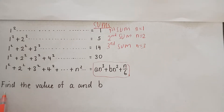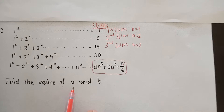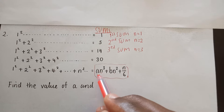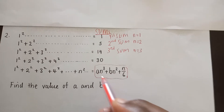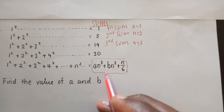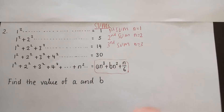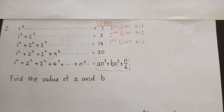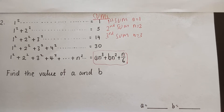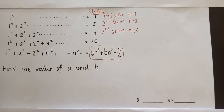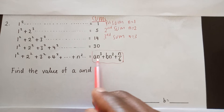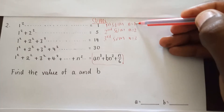Therefore, we are told to find the value of a and the value of b — meaning we have a here and b here, and we need to find their values. Since we have two unknowns, we need to create simultaneous equations with two unknowns, then work them out so that we can find the values of a and b.